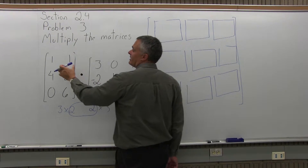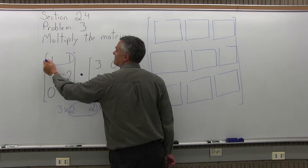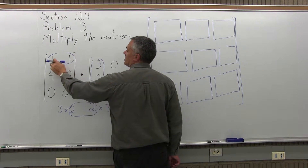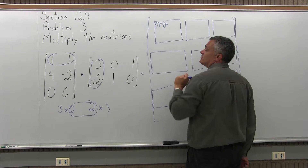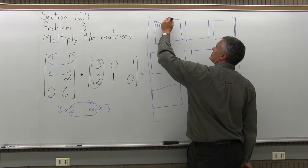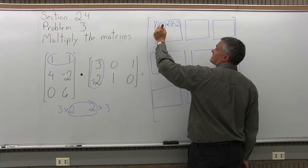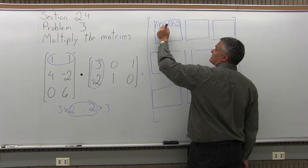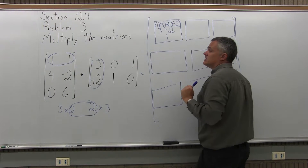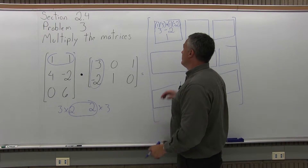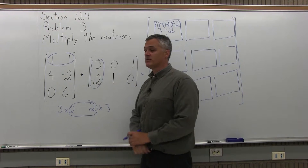I'm going to multiply the top row, 1, 1, from the first matrix times the first column, 3, negative 2, from the second matrix. First times first is 1 times 3, and add that to second times second, which is 1 times negative 2. So 1 times 3 is 3, and 1 times negative 2 is minus 2. That gives us 3 minus 2, which is positive 1. That answer goes in the top row and first column of the solution.